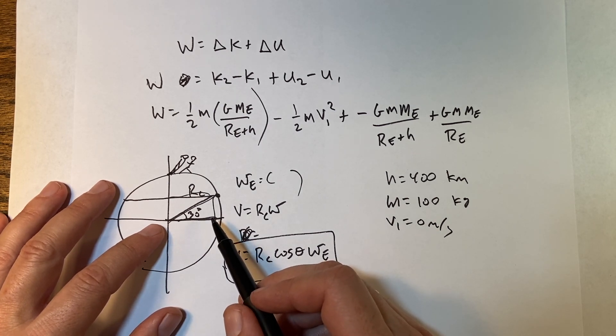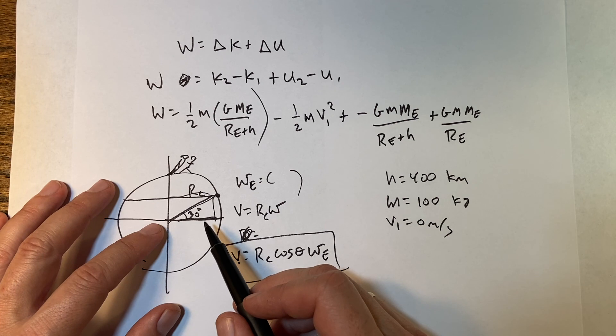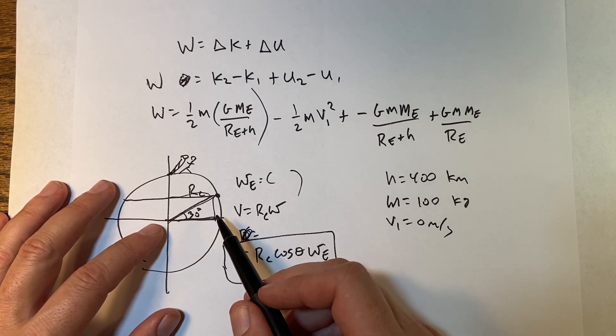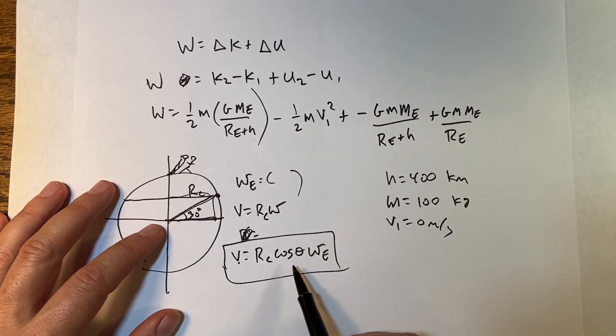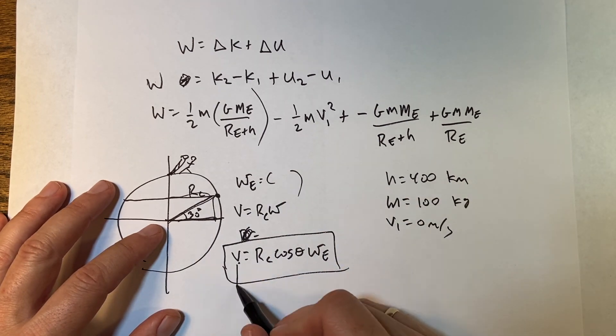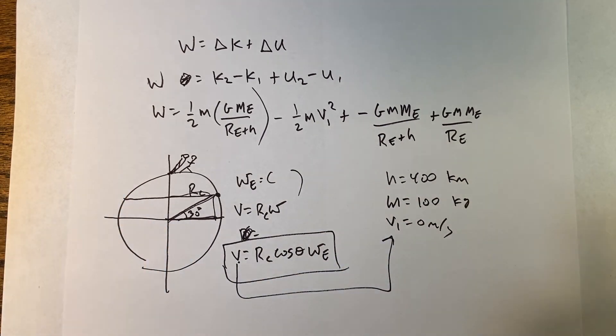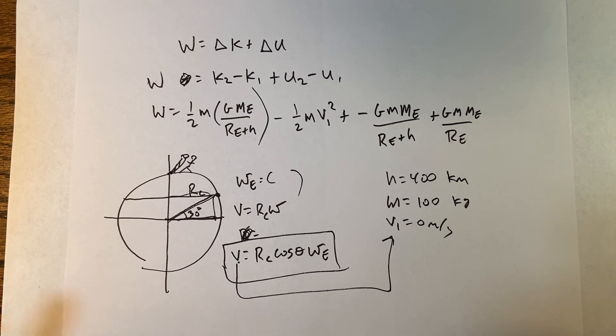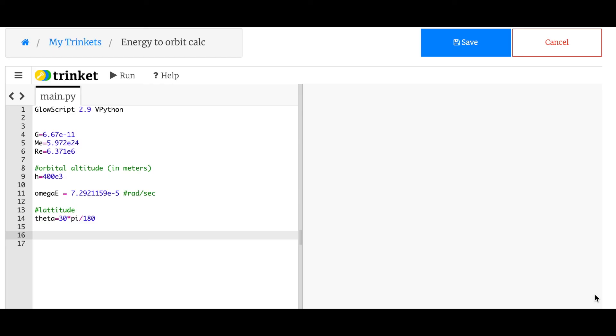And this assumes that you're launching in the same direction that the earth is rotating. If you launch in the opposite direction, then you're just making things harder on yourself. So now I could put this as my v1, and then I can get all the possible combinations of how much energy it takes to get into orbit, but no point putting all these numbers in multiple times. It's better just to make one calculation and do it as a calculation.